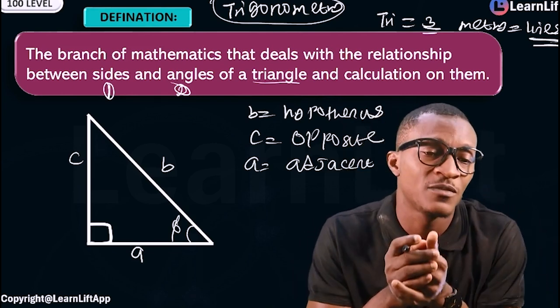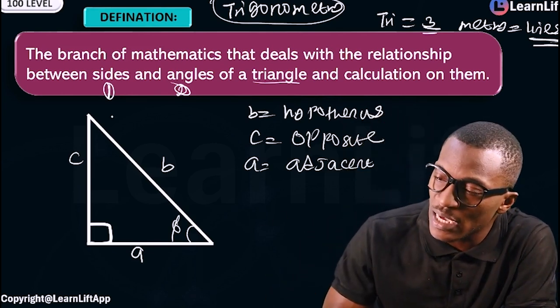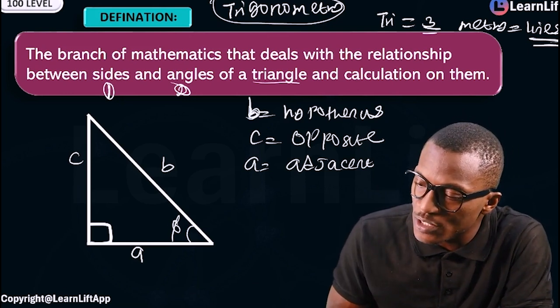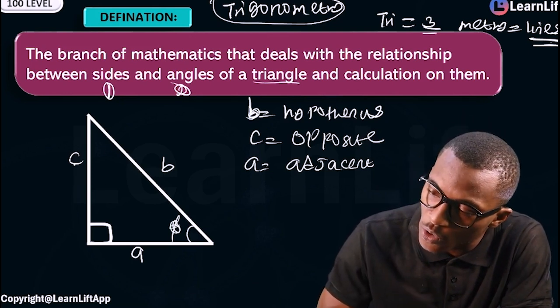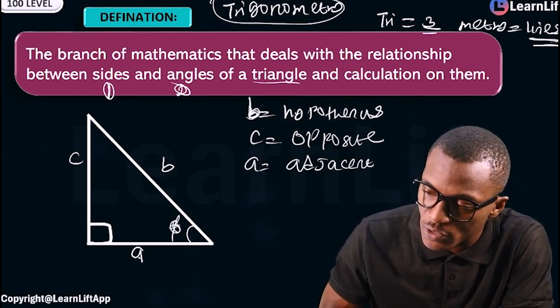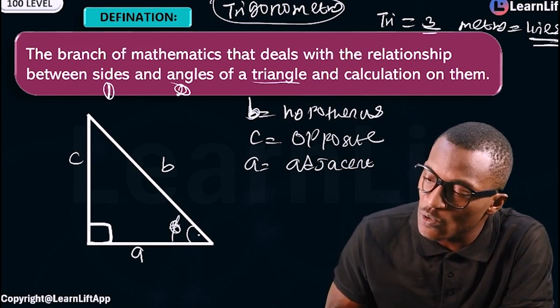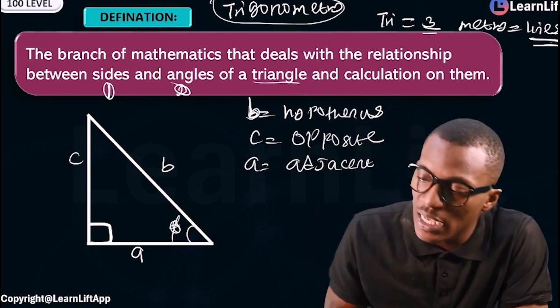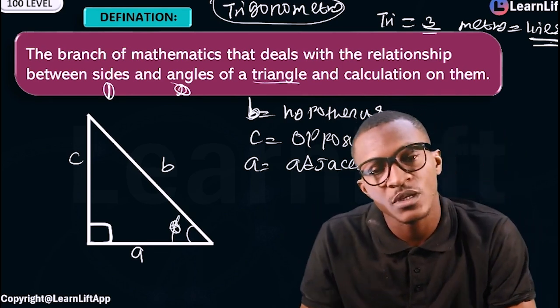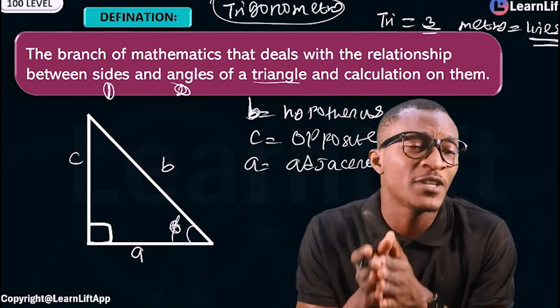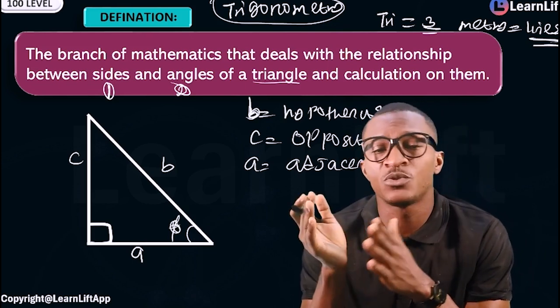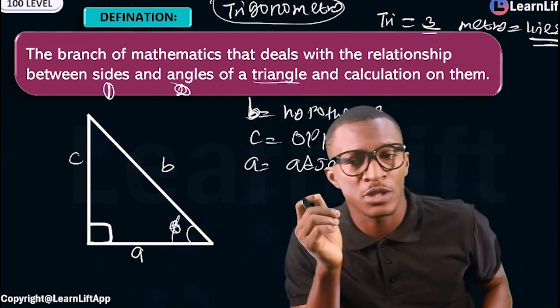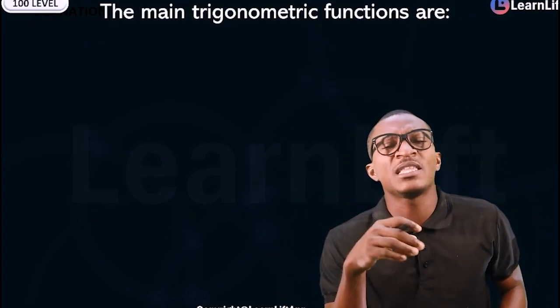These are the sides of the angle. Remember: the longest side is called the hypotenuse, the side which the angle is facing is called the opposite. So if the angle is here, it will be the opposite. If theta is facing C, then C is the opposite and this is A. For the last time, trigonometry is the branch of mathematics that deals with the relationship between the sides and angles of a triangle and the calculation about them. What are now the basic trigonometric functions?